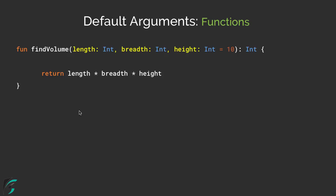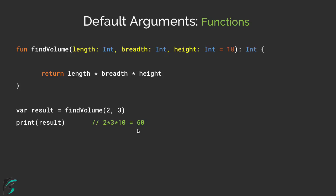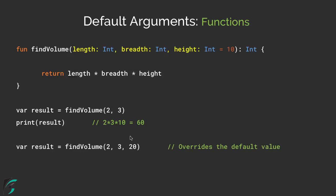Let's take some examples. From the main method, if I call the findVolume method and simply pass 2 and 3 as parameters, then length will become 2, breadth will become 3, and height will be the default value of 10. So this will simply return a result of 60 — that is 2 × 3 × 10. Now proceeding forward, suppose I use findVolume with 2, 3, and 20.